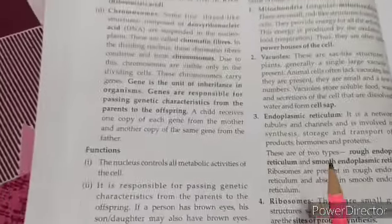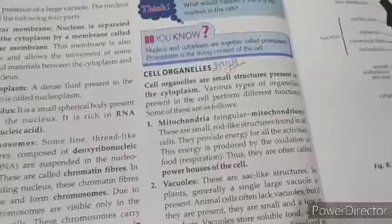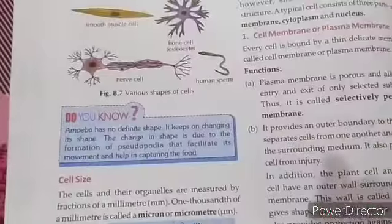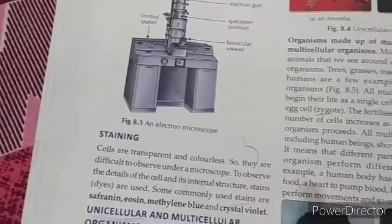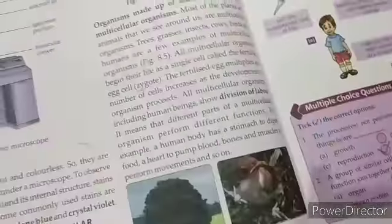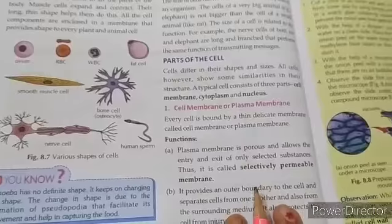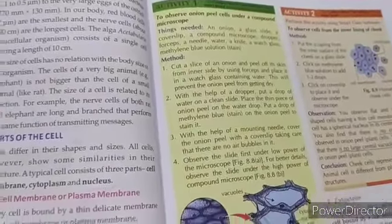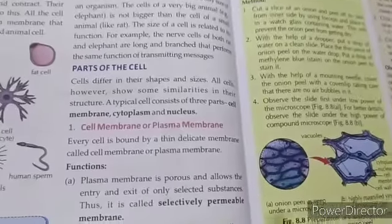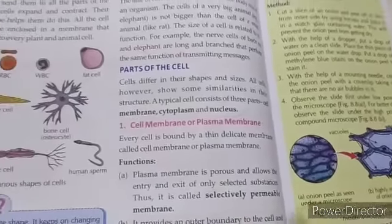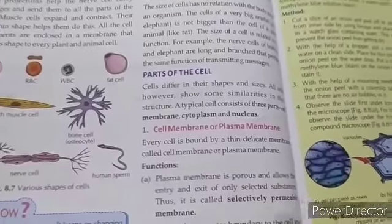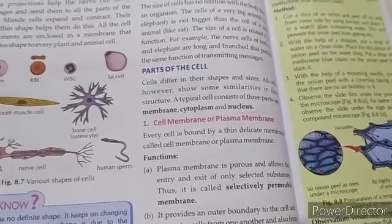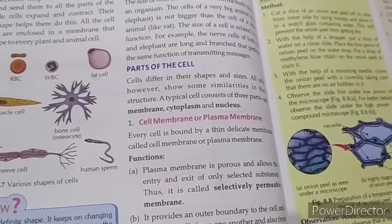So that was our topic on parts of the cell. Next, we will discuss cell organelles in the next video. You need to read cell shape and size, parts of cell, and the two activities. If you have any problems, you can ask. The second unit test will be on Chapter 2 — prepare for it, it will likely be on Sunday, and the date sheet will be available on the app. Thank you, bye bye, keep studying.